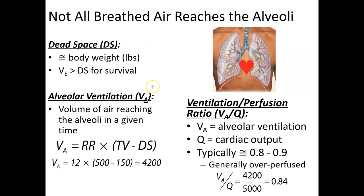Remember for VAQ: VA is alveolar ventilation. The big A stands for alveoli or alveolar. The V is basically volume. We calculate VA similar to VE — respiratory rate times tidal volume minus dead space. VE was just respiratory rate times tidal volume. The problem with VE is it tells you how much air comes out of the lungs, but it doesn't actually tell you how much gas gets exchanged. That exchange gas is the alveolar ventilation.